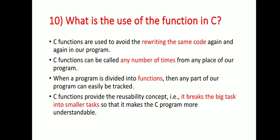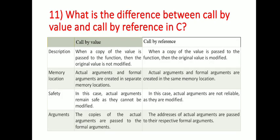Next question: what is the use of functions in C? C functions are used to avoid rewriting the same code again and again in a program. A C function can be called any number of times from any place in the program. When a program is divided into functions, any part of the program can easily be tracked. C functions provide the reusability concept — breaking big tasks into smaller tasks makes the C program more understandable.